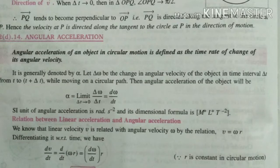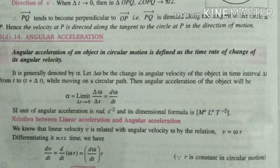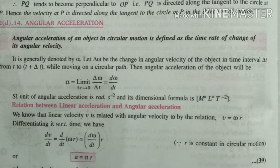Next is angular acceleration. Angular acceleration of an object in circular motion is the time rate of change of angular velocity. Acceleration is velocity by time, so angular acceleration is angular velocity by time. So alpha equals delta omega by delta t. The relation is delta theta by delta t equals omega.